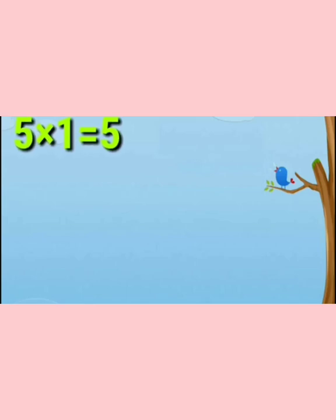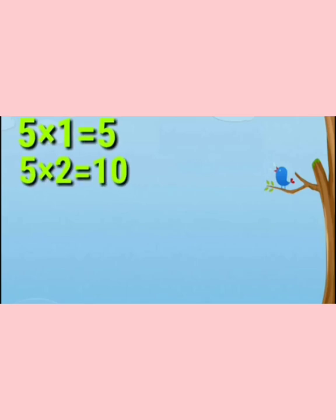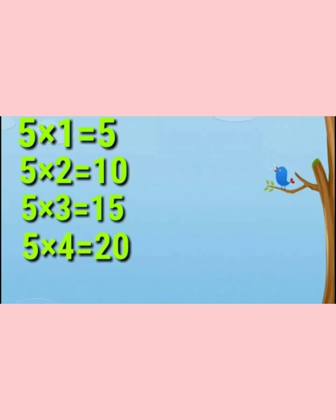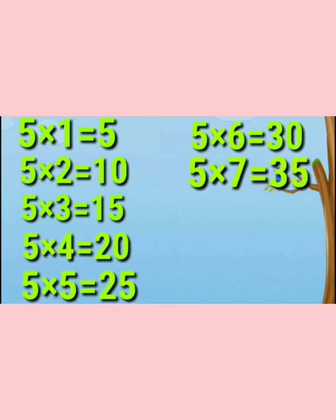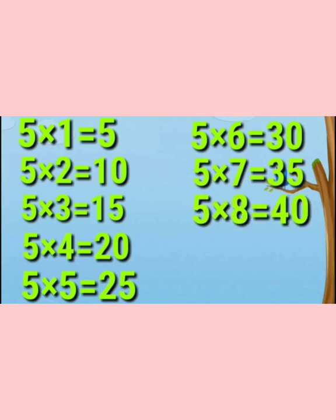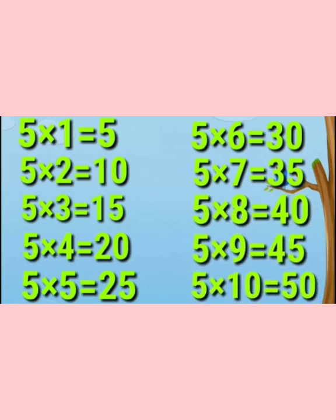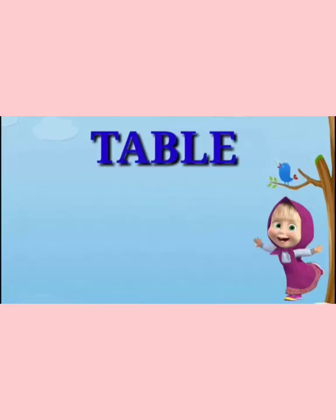Now repeat: 5 ones are 5, 5 twos are 10, 5 threes are 15, 5 fours are 20, 5 fives are 25, 5 sixes are 30, 5 sevens are 35, 5 eights are 40, 5 nines are 45, 5 tens are 50. Next table is table of 6.